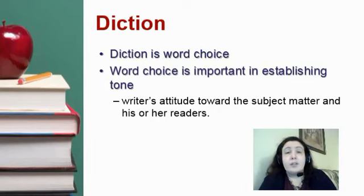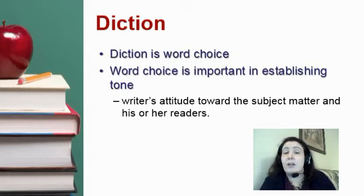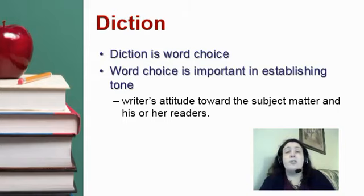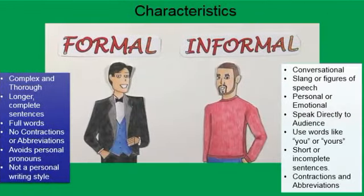Diction looks at your grammar, figurative language, and word usage. Word choice is important for establishing tone as a writer. A writer's attitude towards the subject matter is called tone. There are three different types of diction I want to talk to you about today: formal, informal, and technical. We're going to start with formal and informal, which are the types of diction you're probably most familiar with.